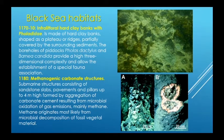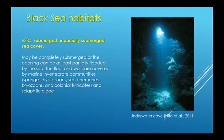Infralittoral hard clay banks with foladids represent the tenth subtype of reefs. Other habitat types identified in Romanian waters include methanogenic carbonate structures and submerged or partially submerged sea caves. These are not very widespread, but are still present.